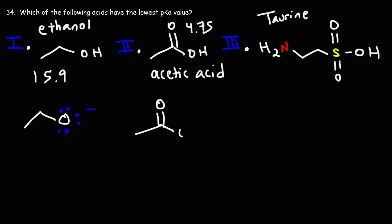The conjugate base of acetic acid is called acetate. We know that acetic acid is the stronger acid, which means acetate has to be the weaker base and ethoxide has to be the stronger base. Why is acetate a weaker base than ethoxide? This has to do with electron delocalization, or resonance stabilization of the conjugate base.